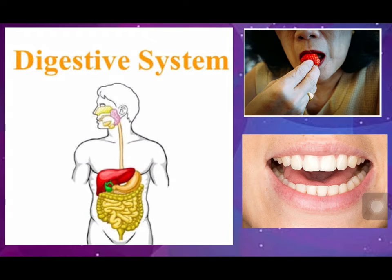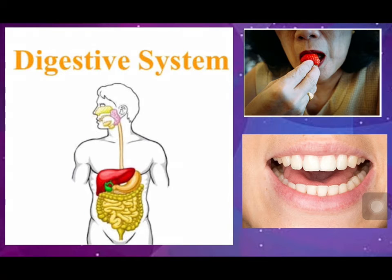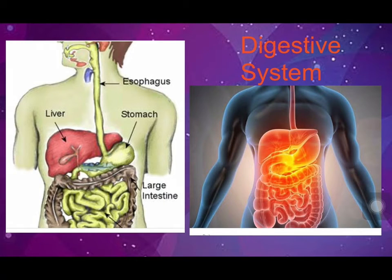Students, as you all know, every day we eat a variety of food. The food we eat cannot be used by our body as it is — it has to be broken down into smaller substances that can be absorbed by the blood in our body. The breaking down of food into smaller substances inside the body is called digestion.